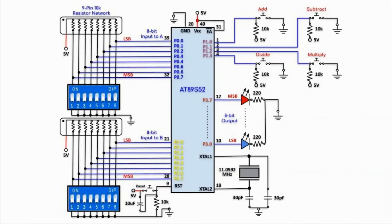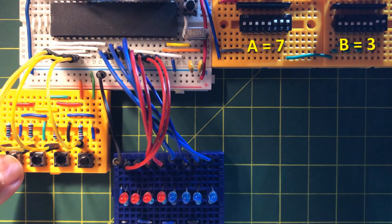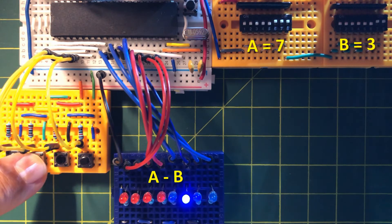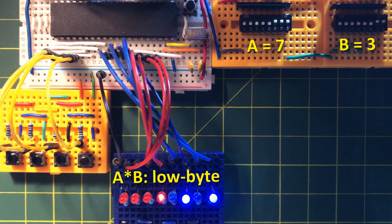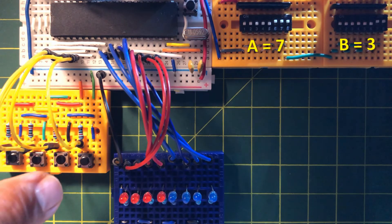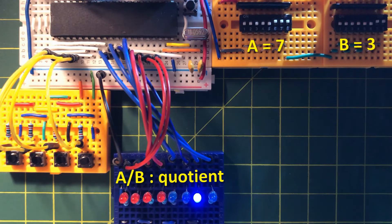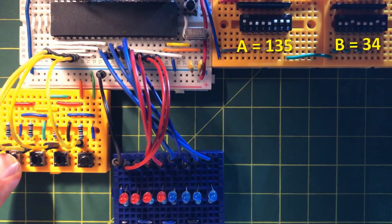This is the circuit diagram of the implemented calculator, indicating clearly the interface of each peripheral with the ports of the AT89S52 microcontroller. In the first demo, the first number is 7 and the second number is 3. In the second example, the first number is 135 and the second number is 34.